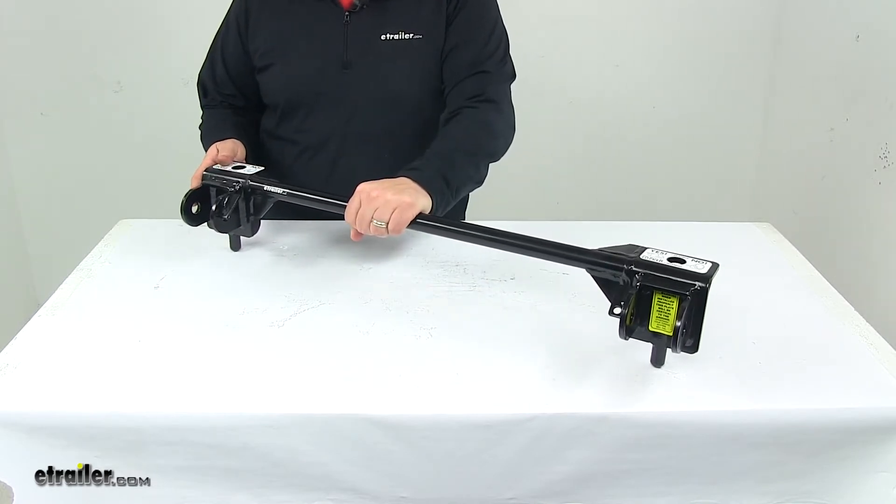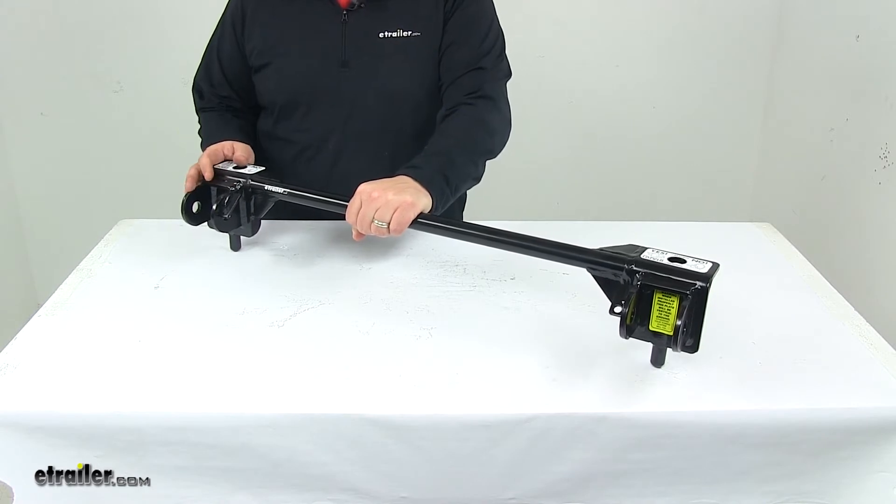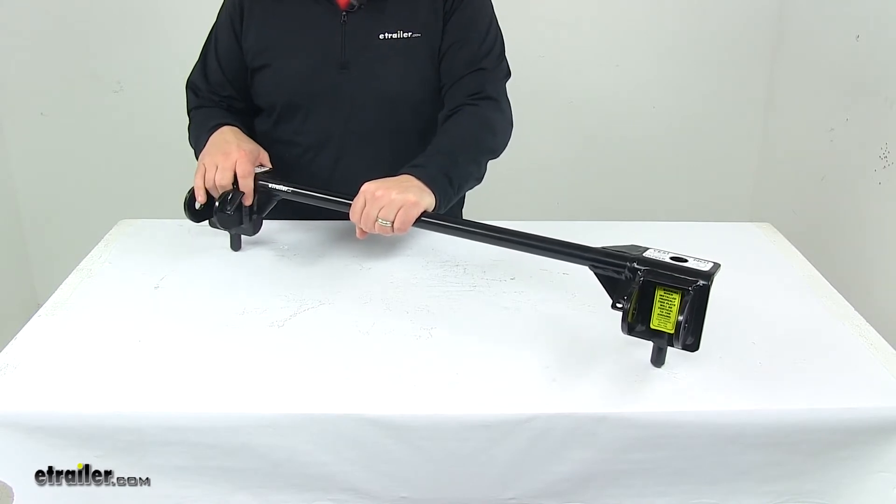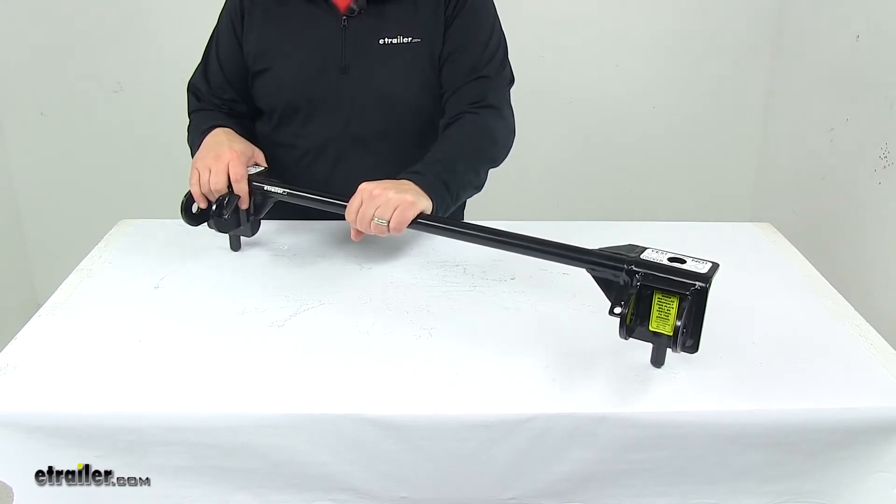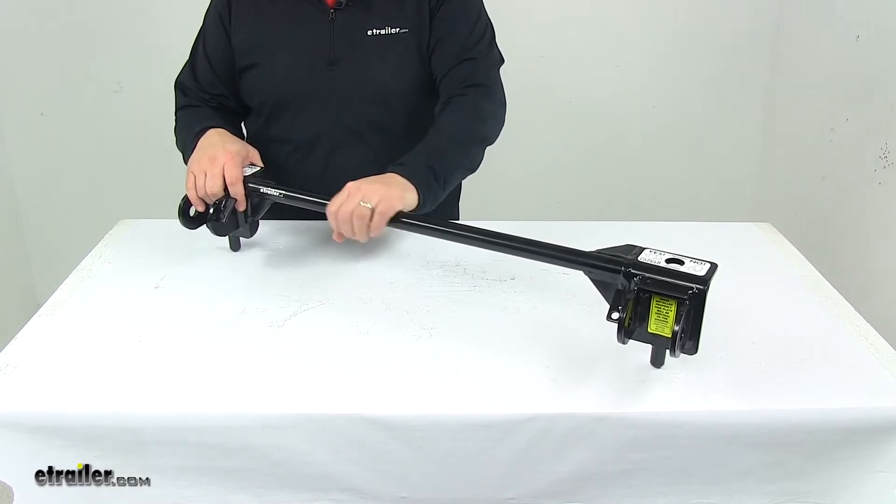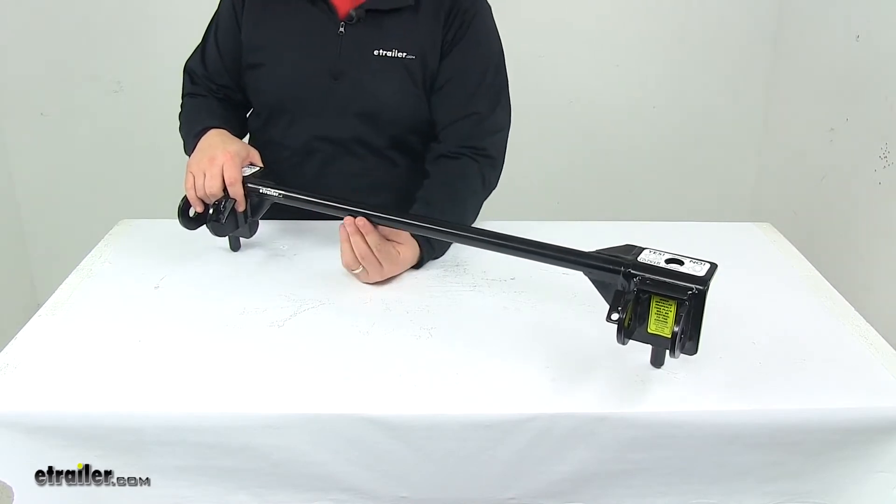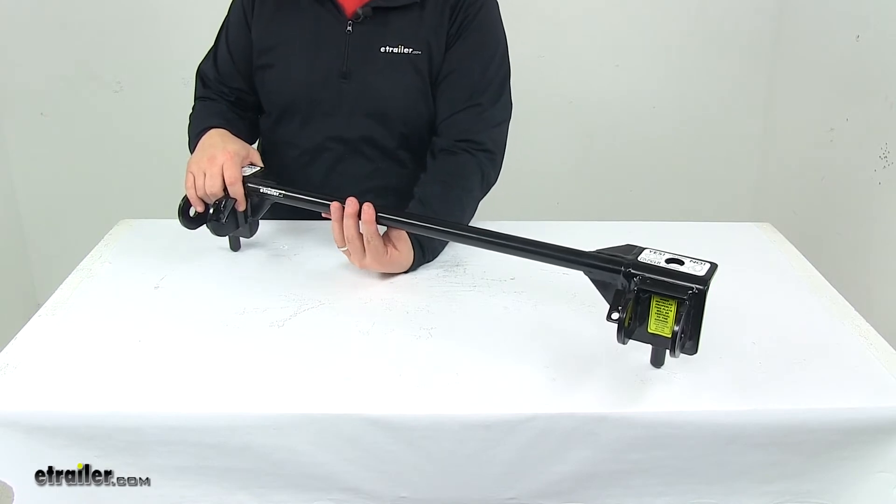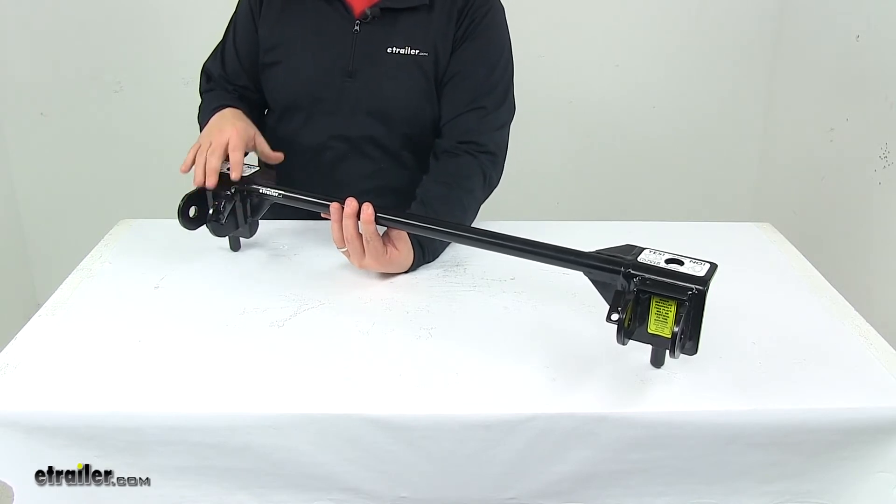This particular system is designed to fit the Falcon 2, the Falcon All Terrain, the Sterling All Terrain, and the Black Hawk 2 All Terrain. It also fits discontinued Falcon, Eagle, Sterling, and Black Hawk tow bars.